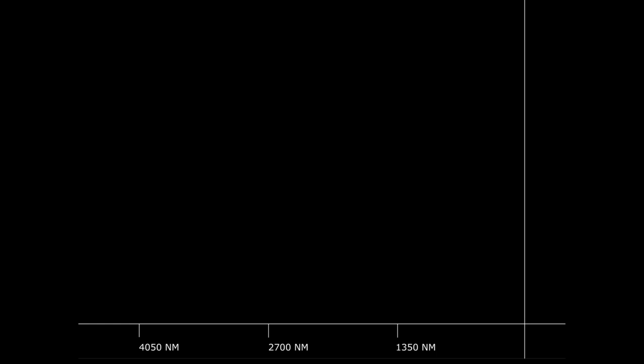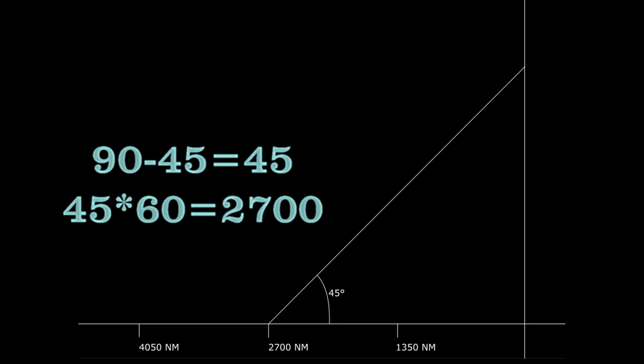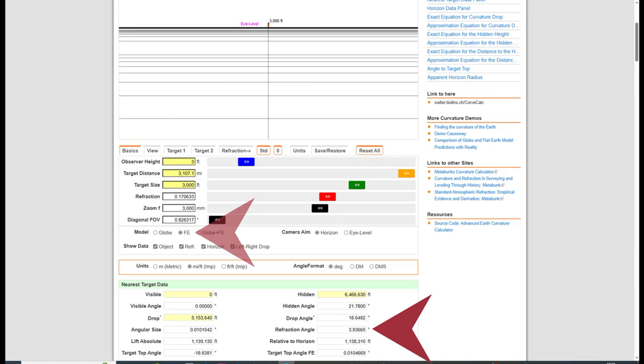But let's assume that refraction can make the 60 nautical miles per degree work. Consider three observers positioned at 1,350, 2,700, and 4,050 nautical miles from the GP. If the 60 nautical miles per degree were correct, the middle observer would have to look at the star at 45 degrees, because 90 minus 45 equals 45, and 45 times 60 equals 2,700. Standard atmospheric refraction, according to Walter Bisling's Earth Curve Calculator, would bend the light at that distance around 3.8 degrees downward.